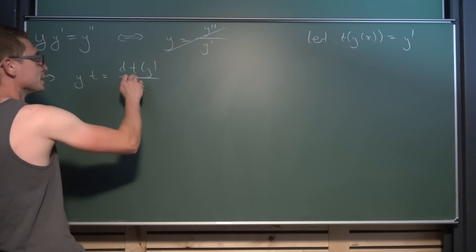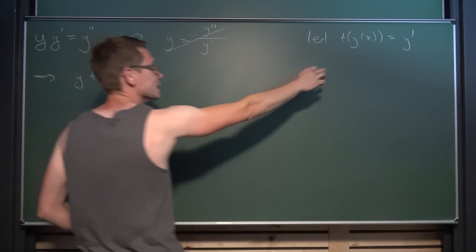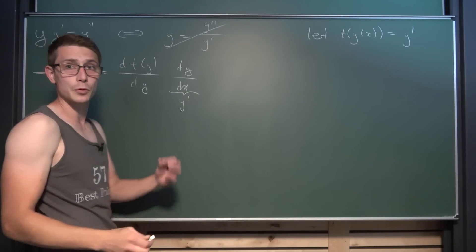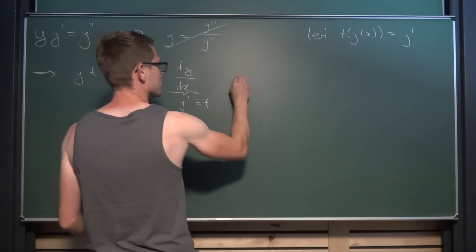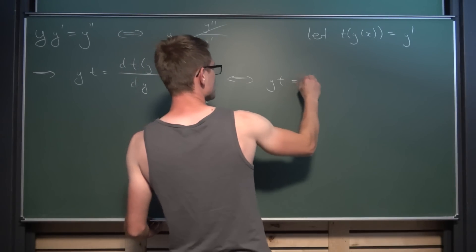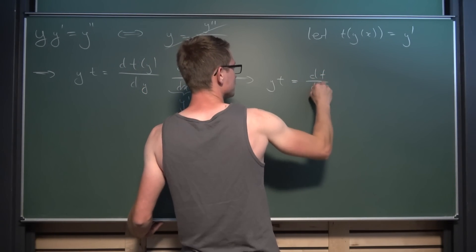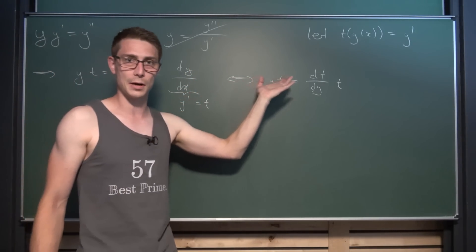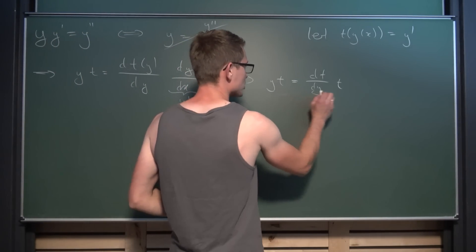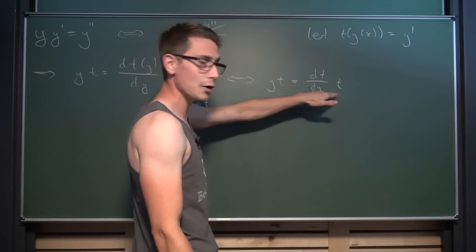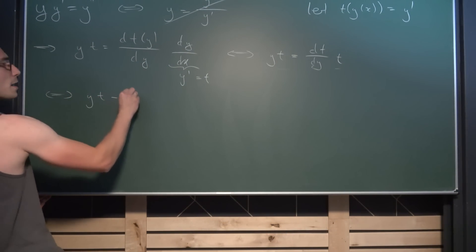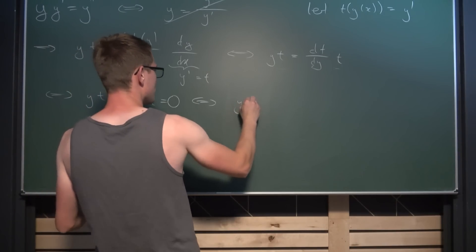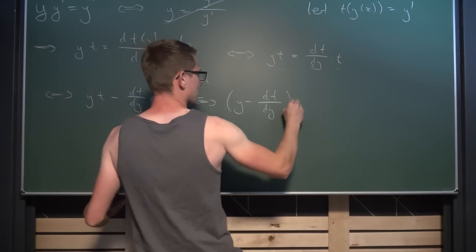So if we differentiate t of y with respect to x, we apply the chain rule: we take the outer derivative dt/dy and then the inner derivative, namely dy/dx. And dy/dx differentiated is nothing other than y prime, which is the same as t. So we arrive at the form: y times t equals dt/dy times t. This is our differential equation written in a different form. Bringing one term to the other side gives us y·t − (dt/dy)·t = 0, and factoring out t yields (y − dt/dy)·t = 0.